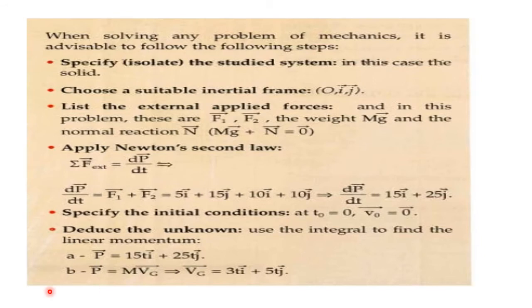In part B, we are asked to deduce the velocity vector of the center of mass of this system. We know that P equals M times Vg, so Vg equals P over M, that is 15ti plus 25tj divided by 5, because the mass of the system equals 5. So, Vg equals 3ti plus 5tj.